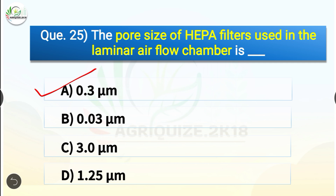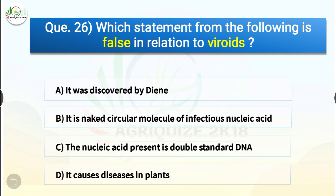Question number twenty-six: Which statement from the following is false in relation to viroids? The options are: it was discovered by Diener; it is a naked circular molecule of infectious nucleic acid; the nucleic acid present is double-stranded DNA; or it causes diseases in plants. The correct answer is option C — the nucleic acid present is double-stranded DNA is false. The nucleic acid in viroids is single-stranded RNA. The true statements are: it was discovered by Diener, it is a naked circular molecule of infectious nucleic acid, and it causes diseases in plants.